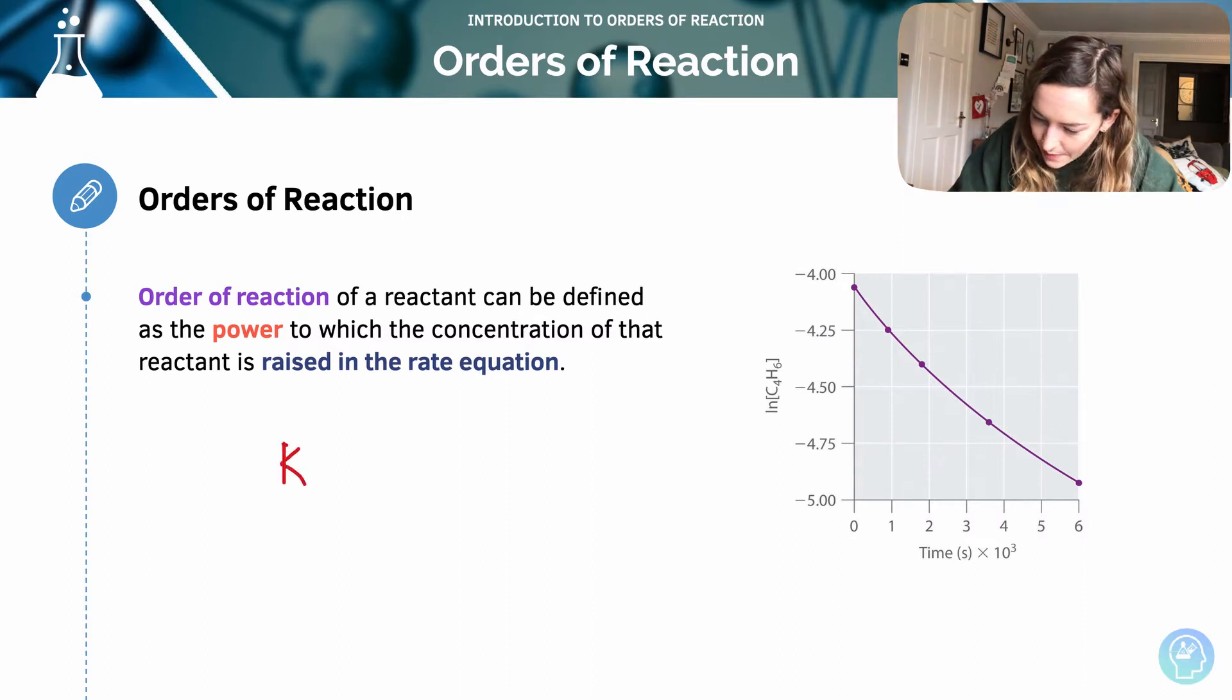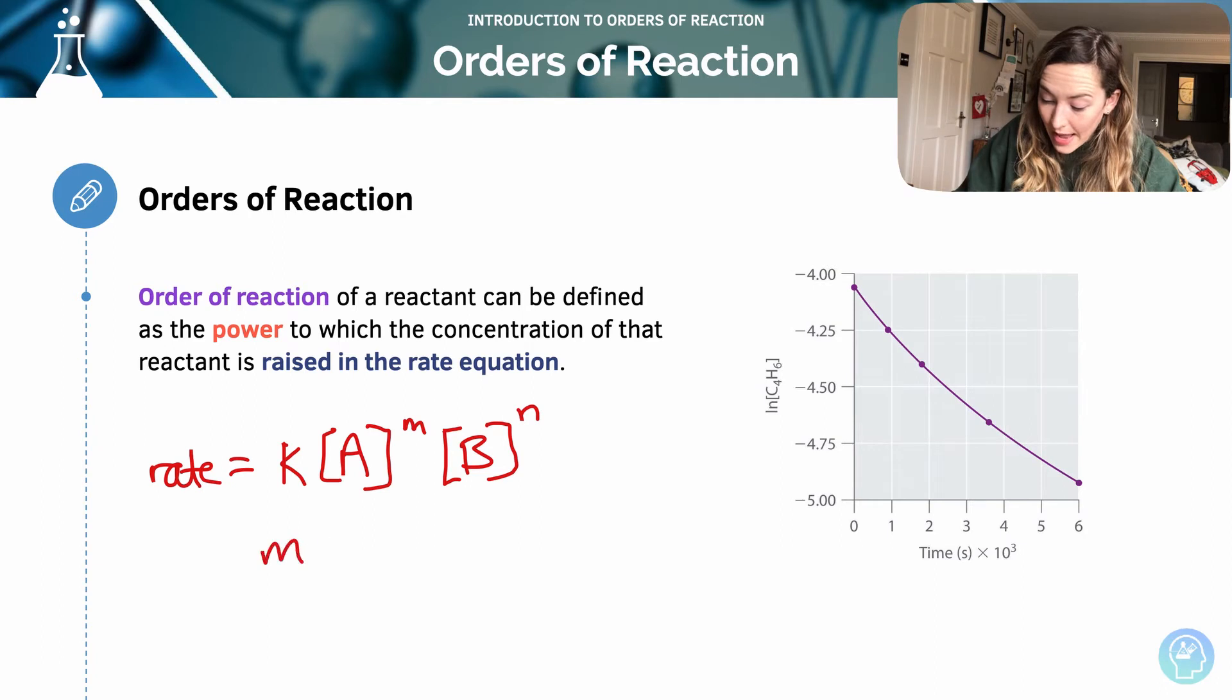The rate is equal to k, our rate constant, times the concentration to the power of m times the concentration of our other reactant to the power of n. And if we add m and n together, that gives us our overall order of reaction.